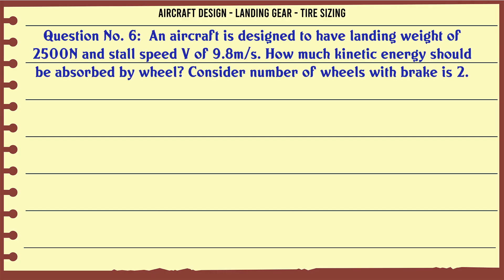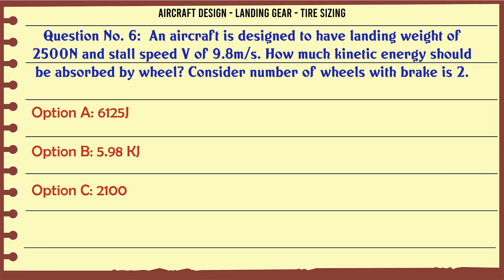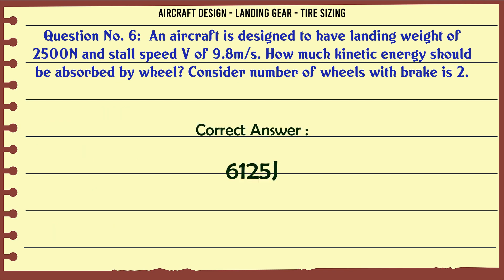An aircraft is designed to have a landing weight of 2500 N, with a stall speed of 9.8 m/s. How much kinetic energy should be absorbed by the wheel? Consider the number of wheels with brakes is 2. A) 6125 J, B) 5.98 kg, C) 2100, D) 235 kg. The correct answer is 6125 J.